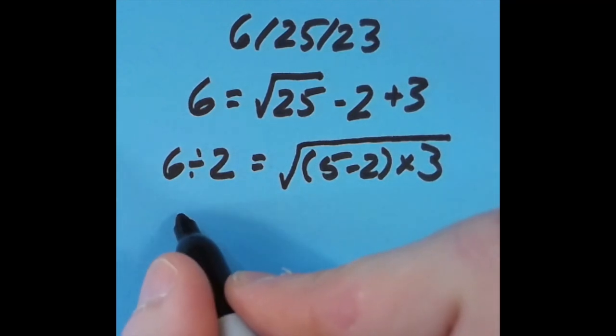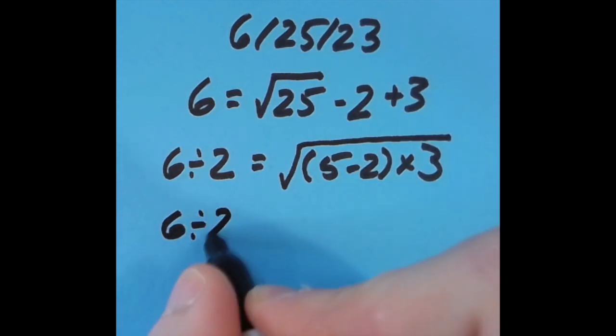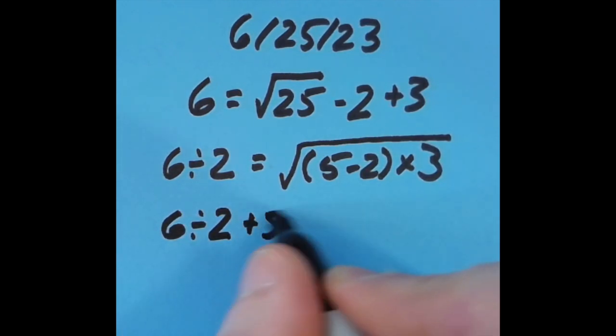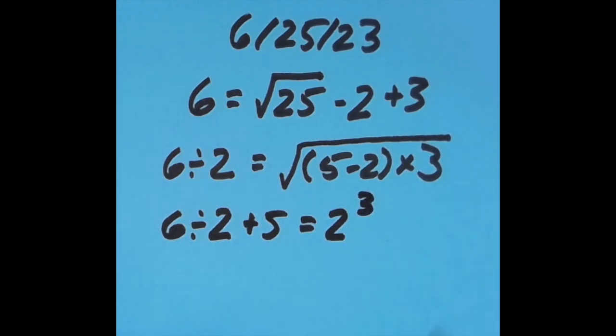With the equal sign another spot to the right, I did 6 divided by 2 to get 3, plus 5 is 8, and so is 2 to the third power. That's just 2 times 2 times 2, which is 8.